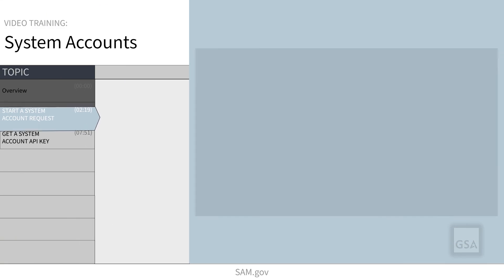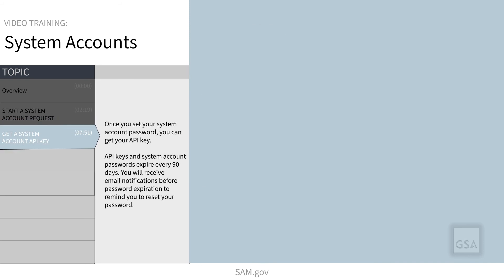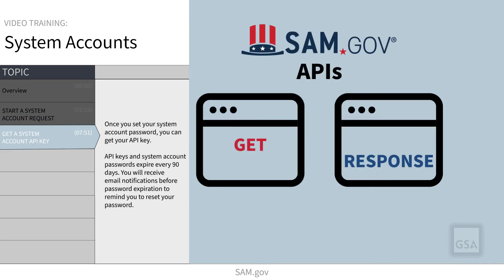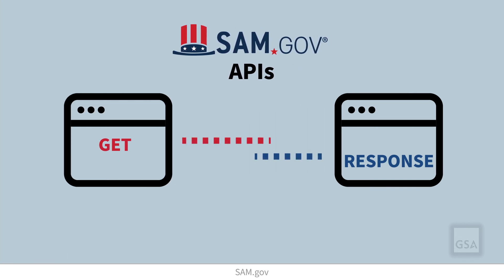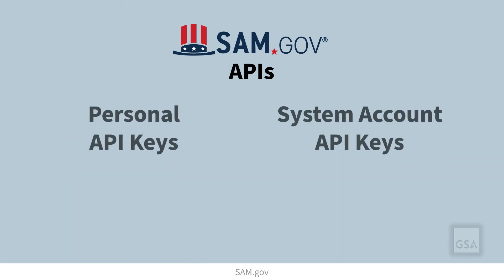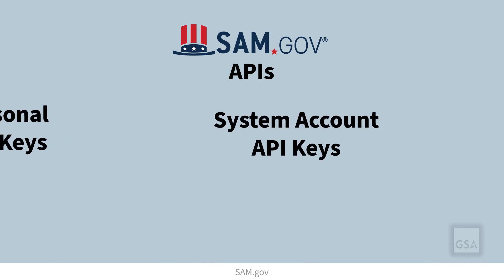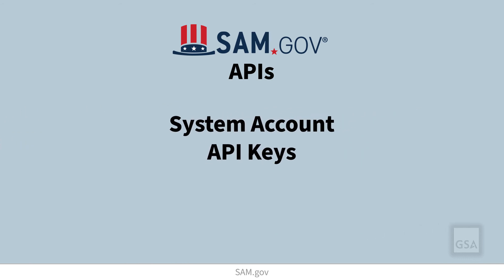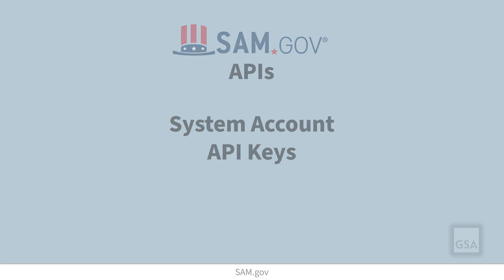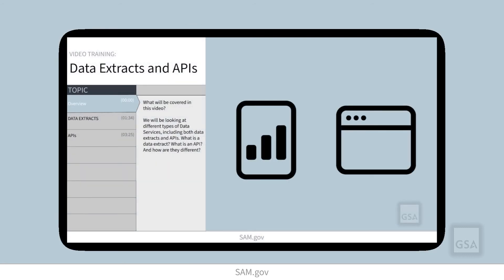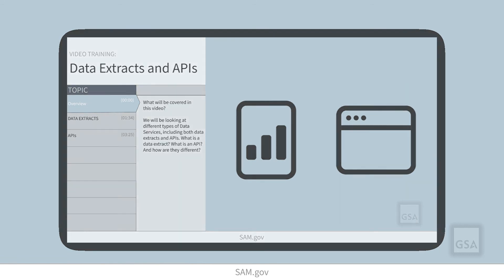Once your system account is active or published, you will need to get your system account API key. An API key gives you access to our APIs to get, pull, or push detailed information from the system using various parameters. There are two types of API keys: personal and system account. In this video demonstration, we will show you how to get your system account API key. Please see our video titled 'Data Extracts and APIs' to learn about the personal API key.